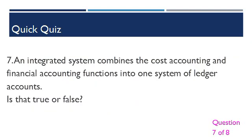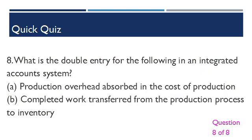Question 7: An integrated system combines the cost accounting and financial accounting functions into one system of ledger accounts — is that true or false? Question 8: What is the double entry for the following in an integrated accounts system? A. Production overhead absorbed in the cost of production. B. Completed work transferred from the production process to inventory.